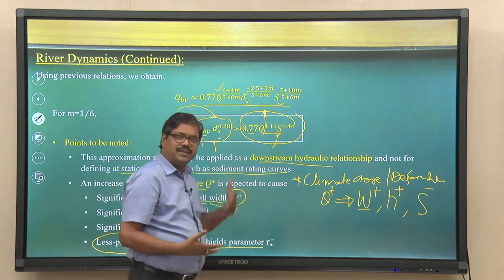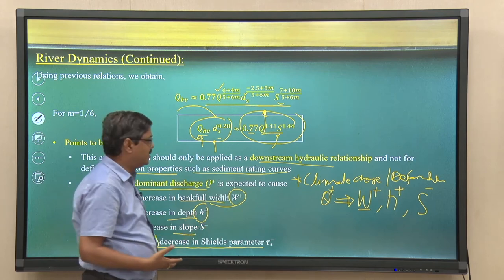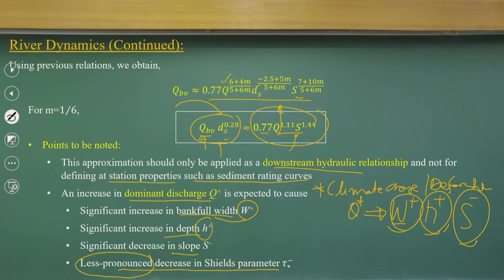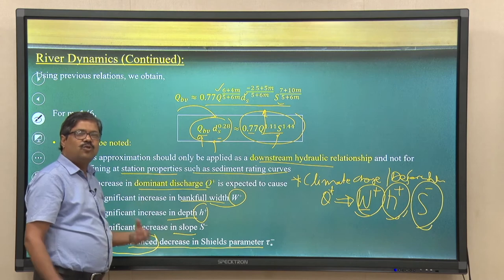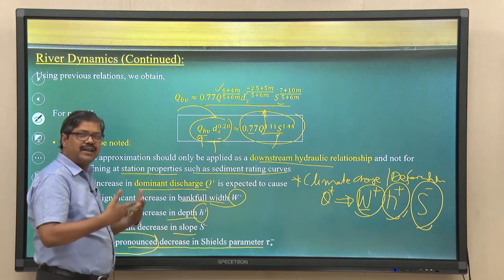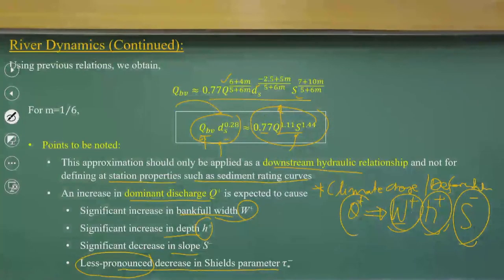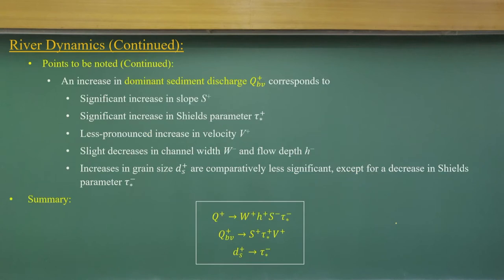Because of climate change or deforestation, if dominant discharge is increasing, the river width and flow depth are expected to increase, while slope can decrease. However, parameters like d50 values, Shield parameters, and shear stress are not going to change within a few years — it takes longer than a decade for d50 to change. So understanding the effect of increasing dominant discharge primarily affects width, flow depth, and shows a decreasing trend in river slope.